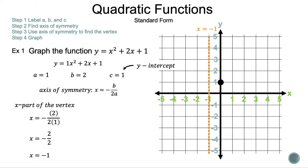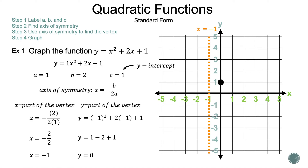Let's draw the axis of symmetry on the graph. Our vertex is somewhere on that dotted line. We already have the x part of the vertex, so let's calculate the y part by substituting negative 1 for each x. So we have y is equal to negative 1 squared plus 2 times negative 1 plus 1. Negative 1 squared is 1, and 2 times negative 1 is negative 2, and 1 minus 2 plus 1 is 0. So y is equal to 0. Let's match those numbers together to make the point negative 1, 0. Let's plot it on the graph.